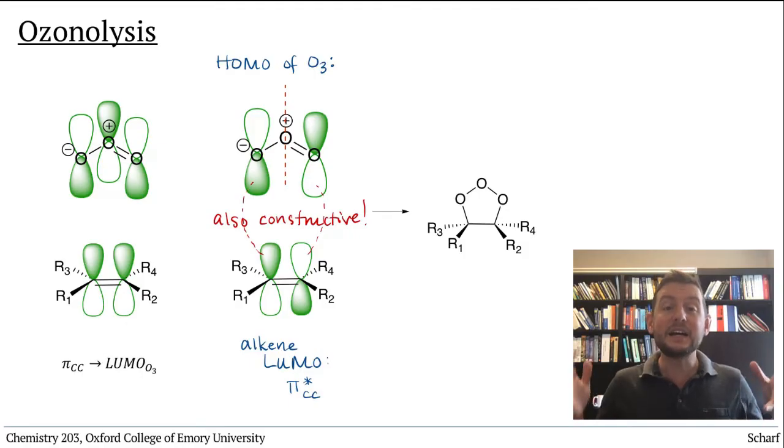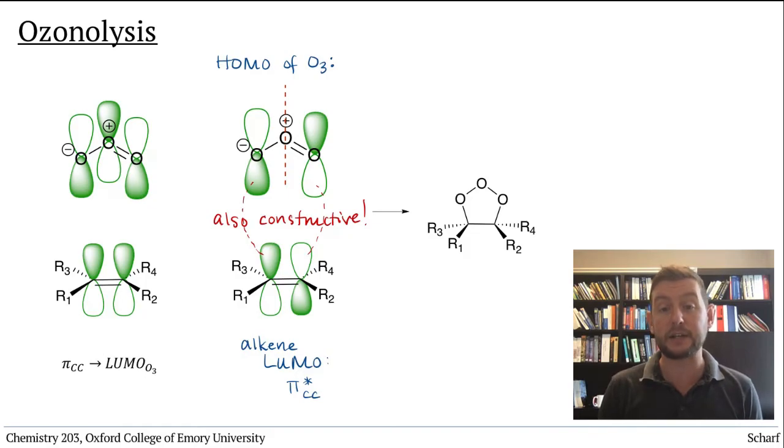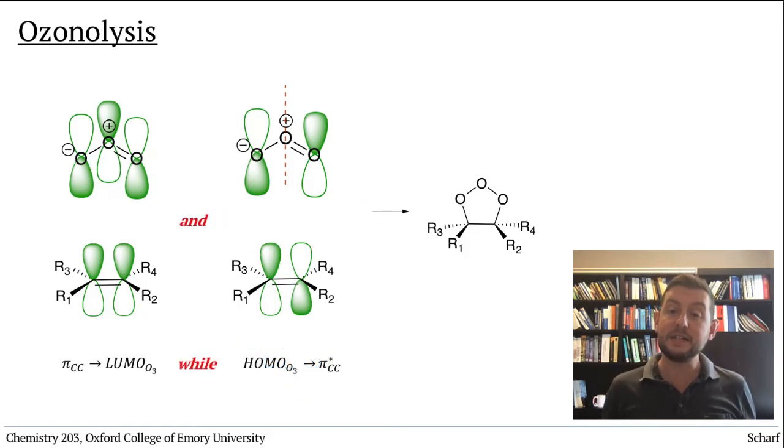It's the combination of these two molecular orbital interactions, pi CC donating into the LUMO of ozone while the HOMO of ozone donates into pi star CC, that makes the two new bonds formed in the first step of ozonolysis.